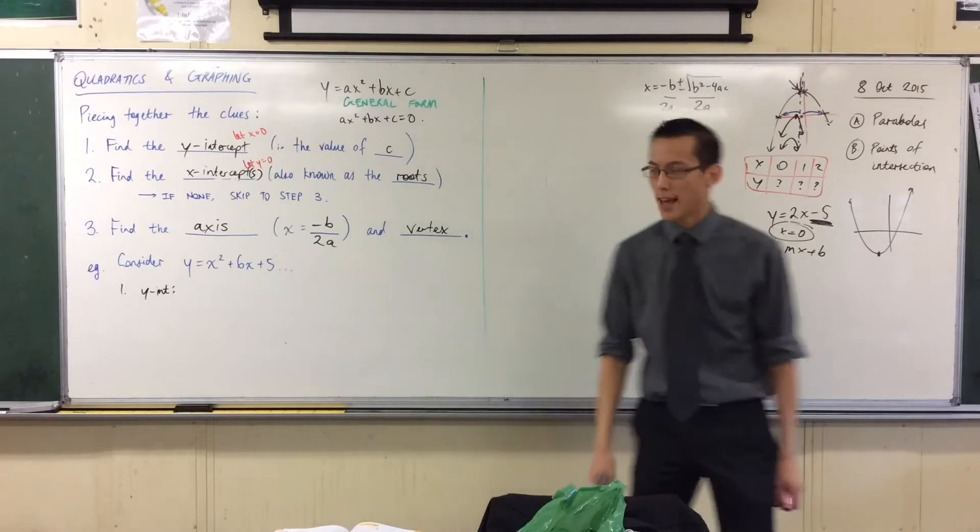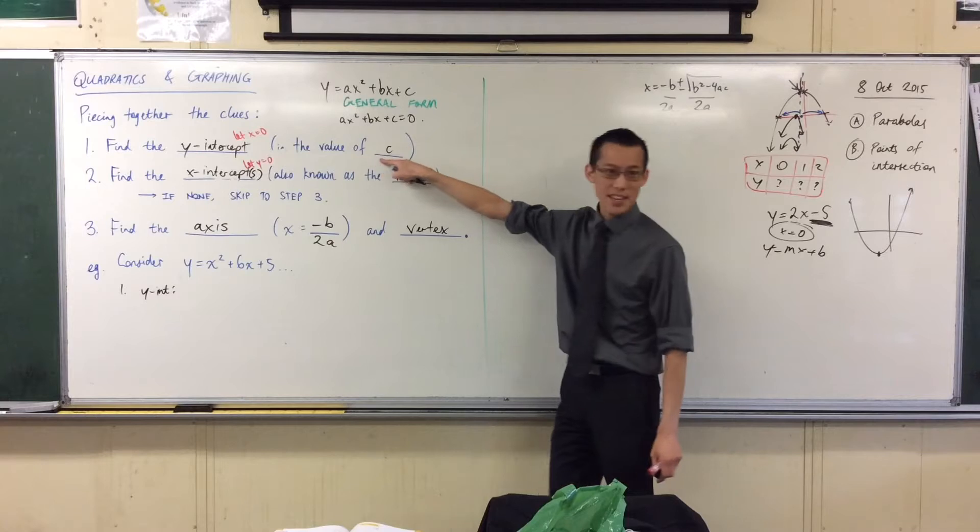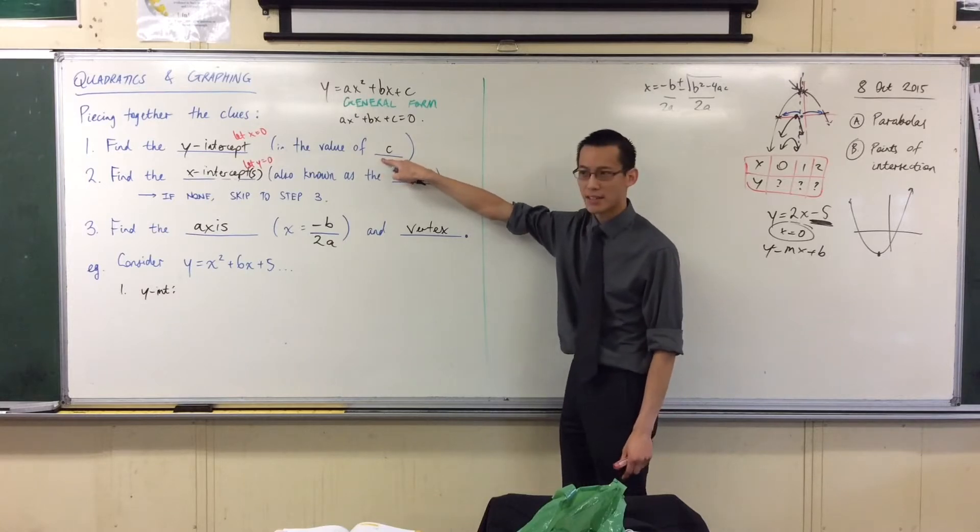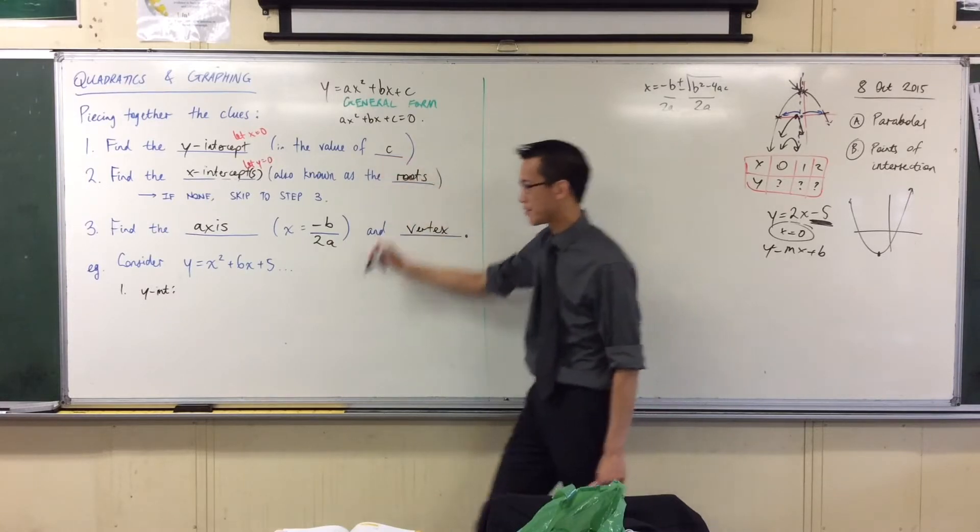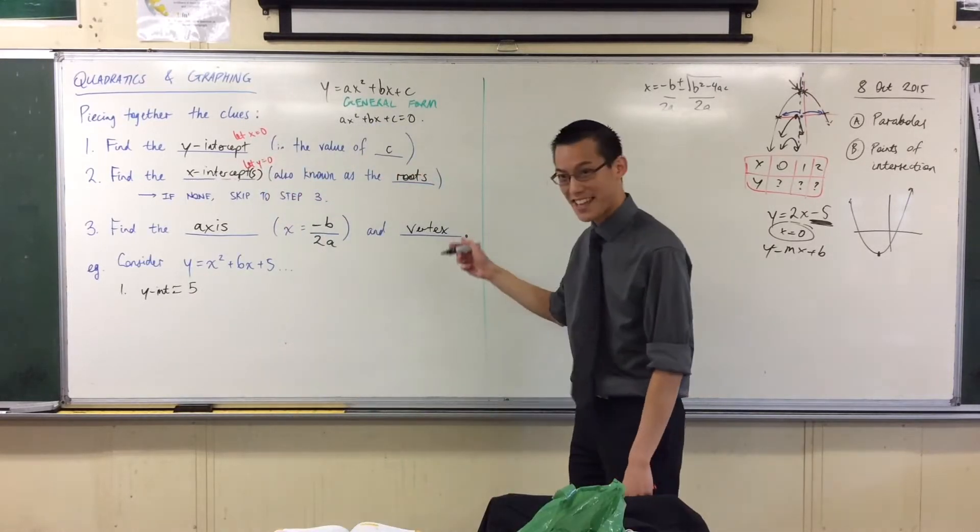That's just my abbreviation. To find the y-intercept, what do I do? I just look at the value of c. What's the value of c in this case? Five. The y-intercept is five. That was not hard. Next step.